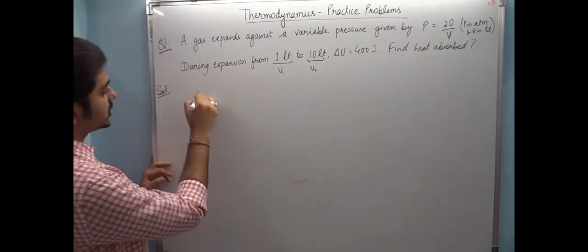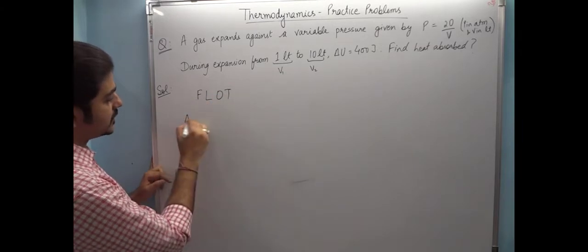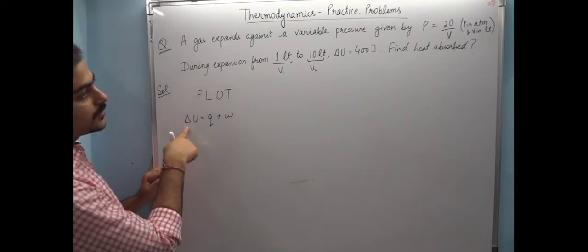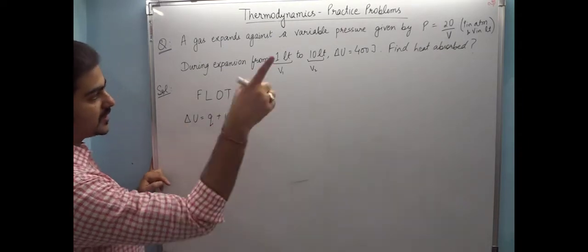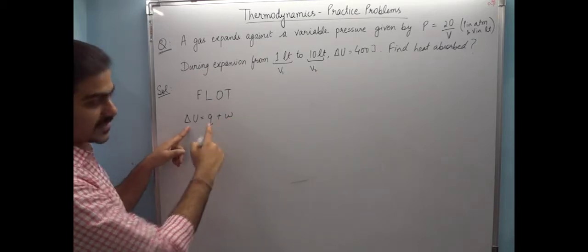First, let's apply the first law of thermodynamics. Delta U is equal to Q plus W. Delta U value is given as 400. If I can calculate work done from the pressure, then using both of these I can find Q. So ultimately, the first task is to calculate work done.